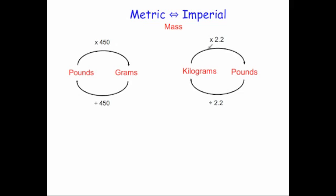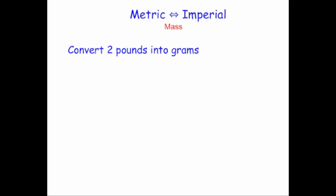To go from kilograms into pounds, you times by 2.2, and to go back from pounds into kilograms, you divide by 2.2. So here are a couple of examples.